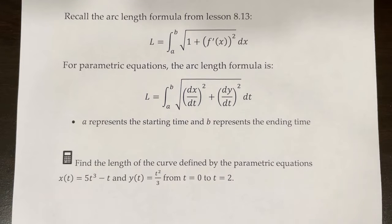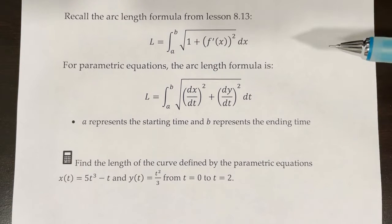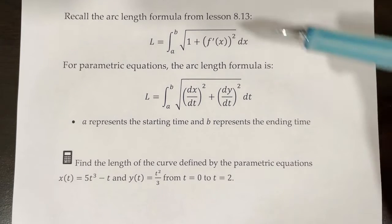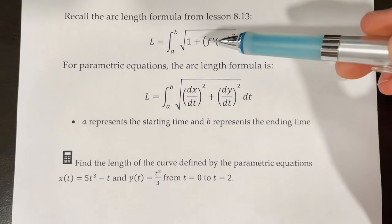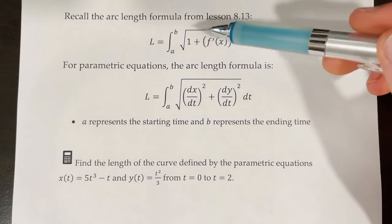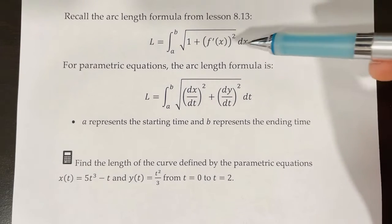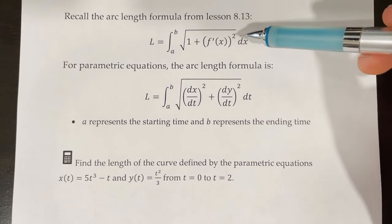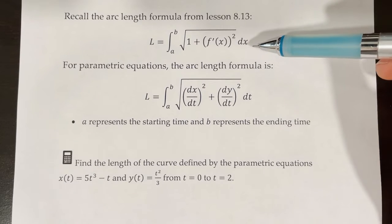Welcome to lesson 9.3. In this video, we'll be discussing arc length for parametric equations. Recall the arc length formula from lesson 8.13: L is equal to the integral from a to b of the square root of 1 plus f prime of x squared, dx.